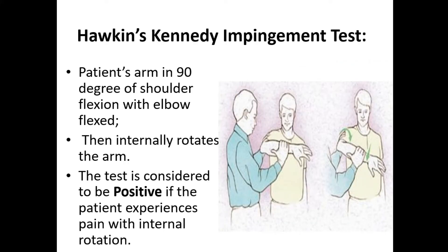Hawkins-Kennedy impingement test: The patient's arm is placed in 90 degrees of shoulder flexion with the elbow flexed. The examiner then internally rotates the arm. The test is considered positive if the patient experiences pain with internal rotation of the forearm.